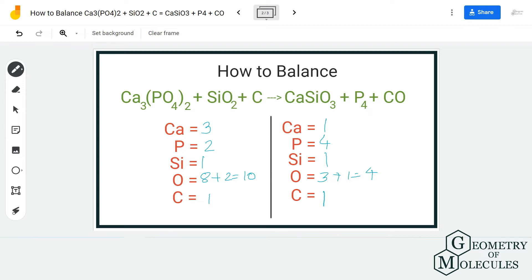So we are going to start with phosphorus atom over here because we have two on reactant side and four on product side. Basically, we just need to multiply this by two, and for that we need to add a coefficient two over here. Now when you add two over here, it changes the number of atoms of calcium and oxygen as well.